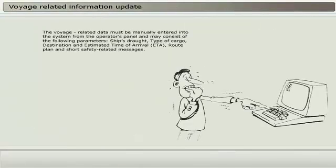The voyage-related data must be manually entered into the system from the operator's panel and may consist of the following parameters: ship's draft, type of cargo, destination and estimated time of arrival, route plan, and short safety-related messages.